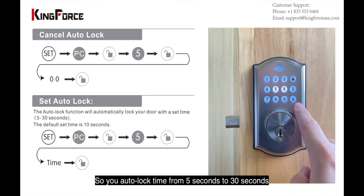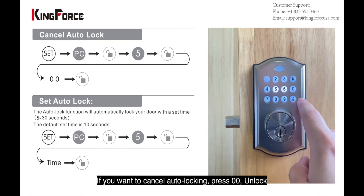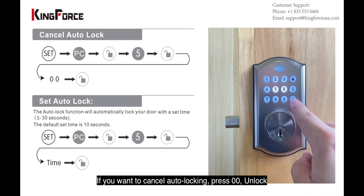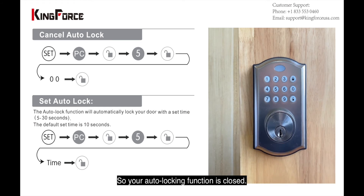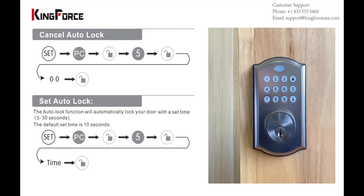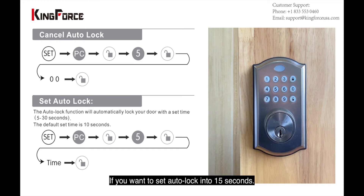If you want to cancel the auto-lock, push zero zero and unlock. Now your auto-locking function is deleted — the lock will not auto-lock. If you want to set your auto-locking to 15 seconds, follow the next steps.